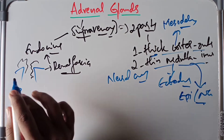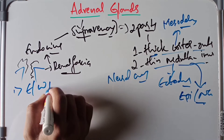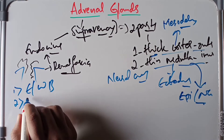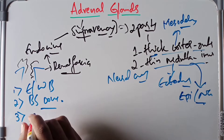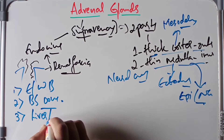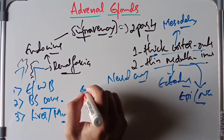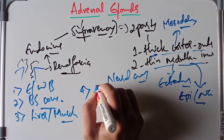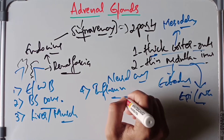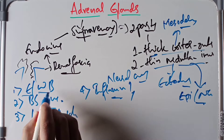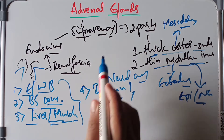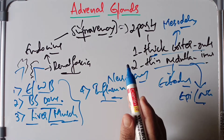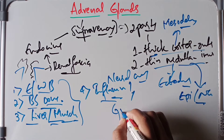The cortex secretes a considerable number of steroid hormones. These are responsible for controlling electrolyte and water balance, maintaining blood sugar concentrations, maintaining liver and muscle glycogen stores, and also helping in inflammatory responses.